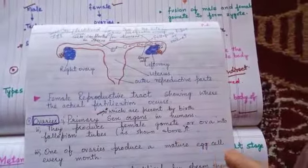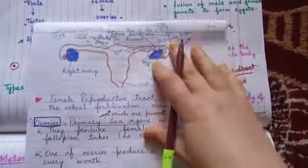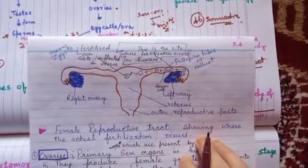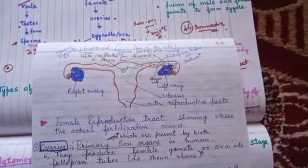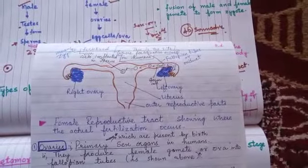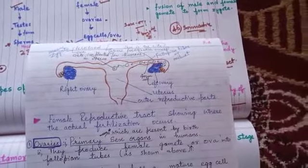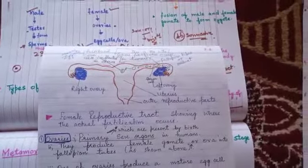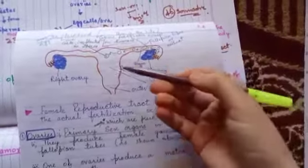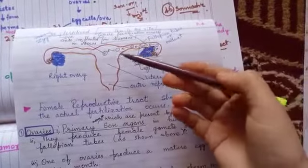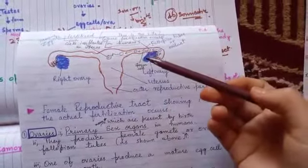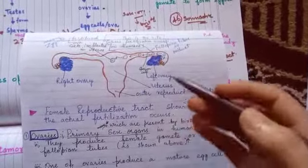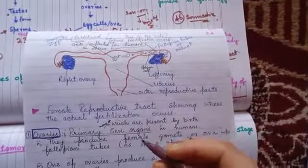As far as the female reproductive system is concerned, here we are looking at the reproductive system of humans. This is the outline of the female reproductive system. It consists of different parts and different organs. This diagram shows clearly the human female reproductive tract, and now I will explain it one by one.